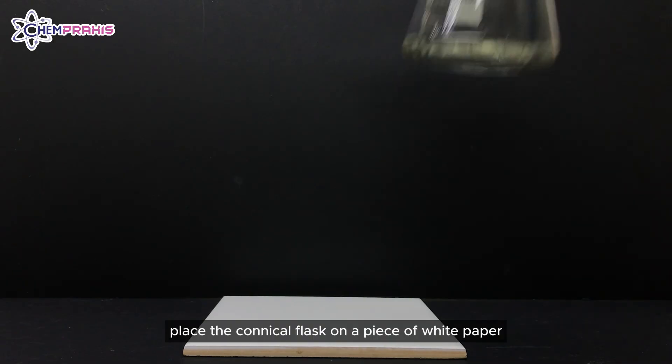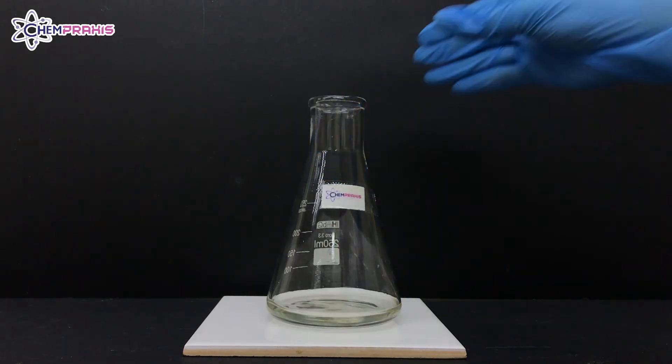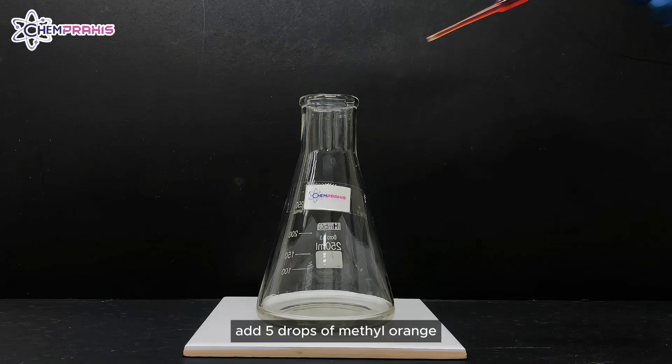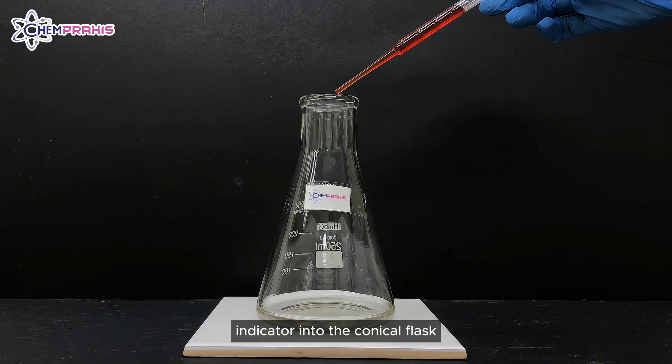Place the conical flask on a piece of white paper. Next, add 5 drops of methyl orange indicator into the conical flask.